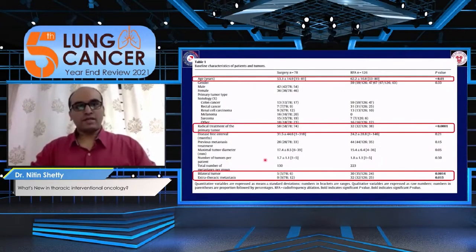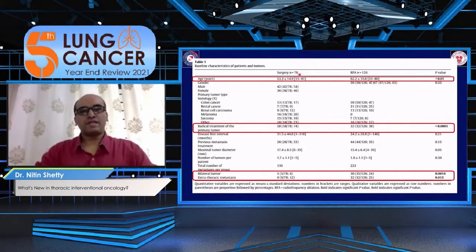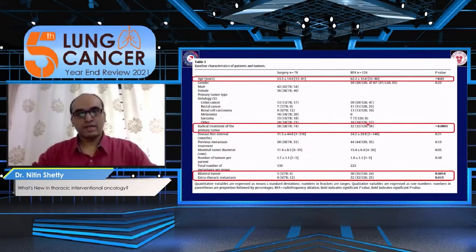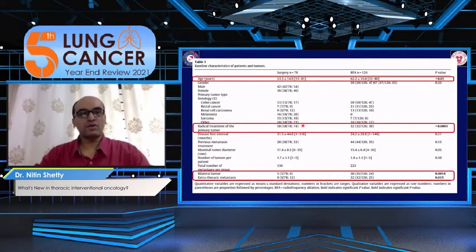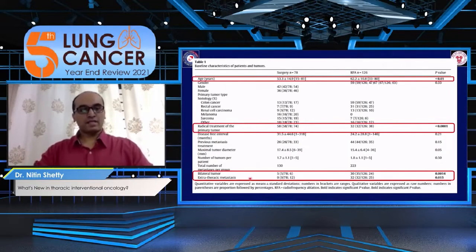Looking at the baseline characteristics, what is striking is the selection bias between the two treatment modalities. There were much older patients in the RFA arm, and around 38% of patients in the RFA group had only undergone resection of the primary tumor, compared to 74% in the surgical arm who had already undergone radical treatment for the primary. Bilateral tumors were much more frequent — about 24% versus 6% in the surgical arm — and extra-thoracic metastases were also doubled in the RFA arm.